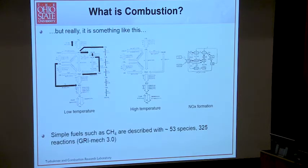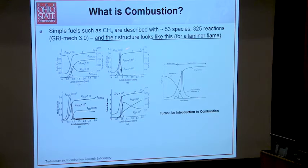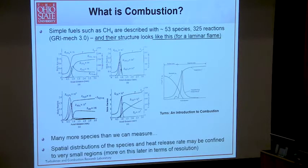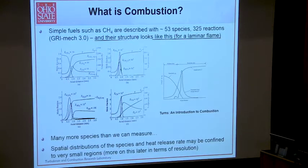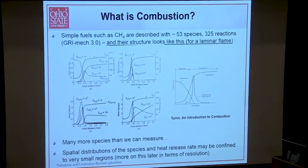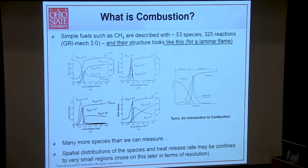This is just from the combustion side. We can look from a laminar flame to take an idea of what's going to exist in maybe a small regime. This is really what the structure looks like for a laminar flame — we end up with a lot of these species confined to very small spaces. There are many more species than we can measure. The spatial distributions and the heat release rate — two quantities that we really want — may be confined to very small regions that we can't actually resolve. At best we're going to measure two or three things — a very sparse representation of the real picture.